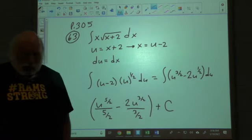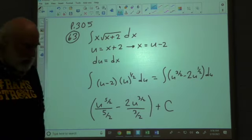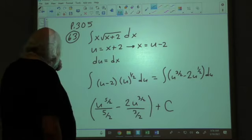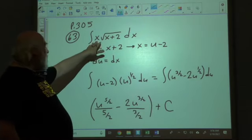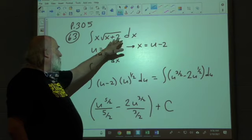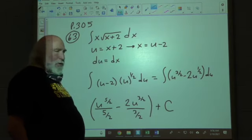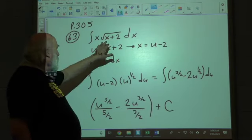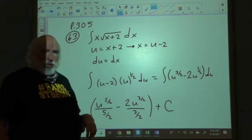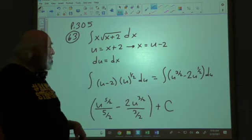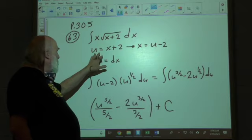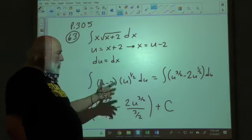Problem number 63. In problem number 63, we're trying to find the integration of x times the square root of x plus 2 dx. Life would be a lot easier if we can get rid of this x plus 2 and replace it with a variable u. So that's what we're going to do. We're going to take u and set it equal to x plus 2.